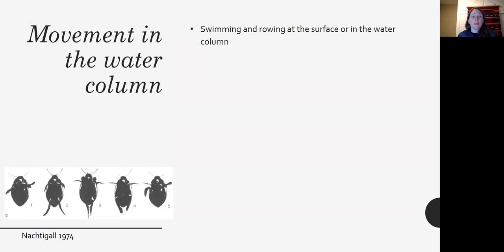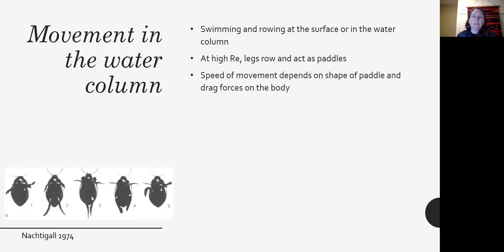Organisms can swim and row both through the water column and across the surface of the water. And when the Reynolds numbers are high, then they use their legs to row and act as paddles. The speed of movement depends on the shape of the paddle and how much drag is kind of slowing the body down.